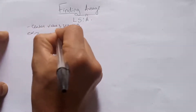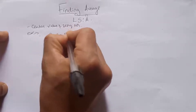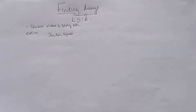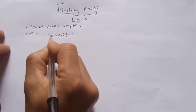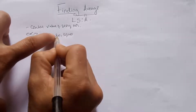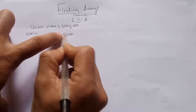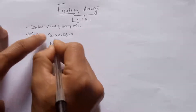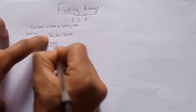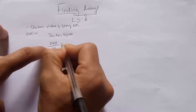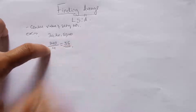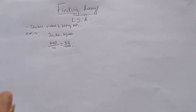Suppose 30, 20, 50, and 40 are given. Find the average of 30, 20, 50, and 40. Let's see: 30 plus 20 is 50, 50 plus 50 is 100, 100 plus 40 is 140. 140 divided by 4 — we get 35. So the average is 35.